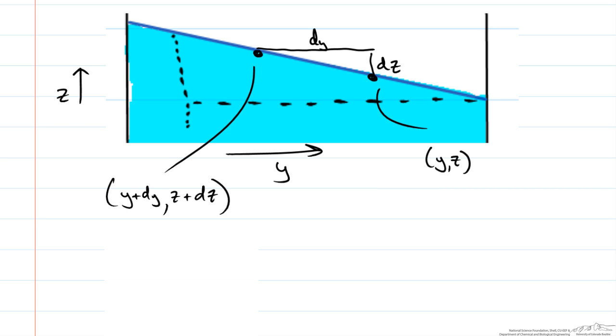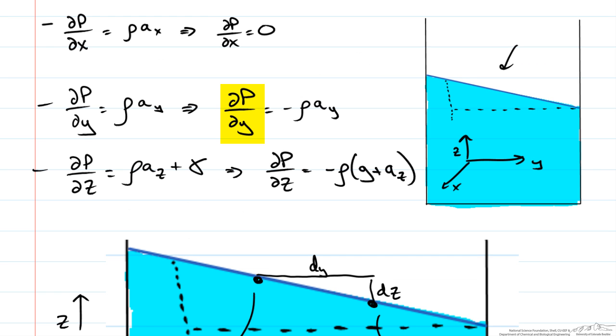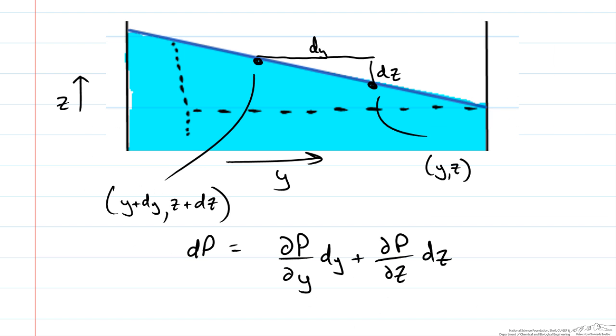Our change in pressure or differential pressure can be rewritten as the following: our differential change in pressure with respect to y times our change in y plus our differential pressure with respect to z times our change in z. If you recall a few seconds ago we had relationships for these differentials. Here we have dp/dy and here we have dp/dz. So we are going to plug those in.